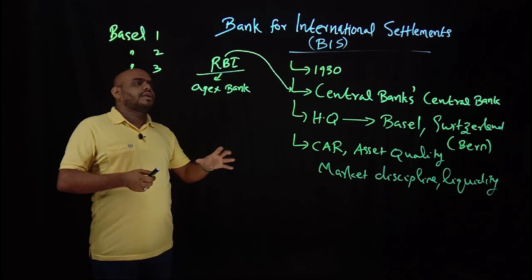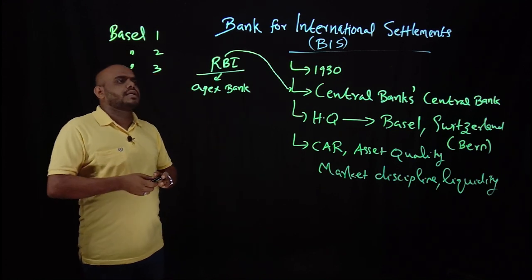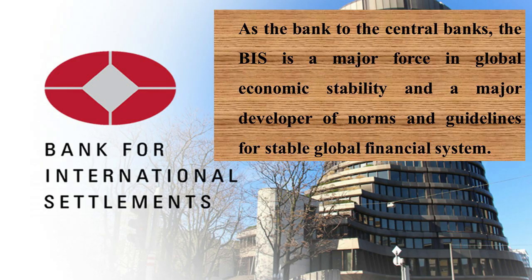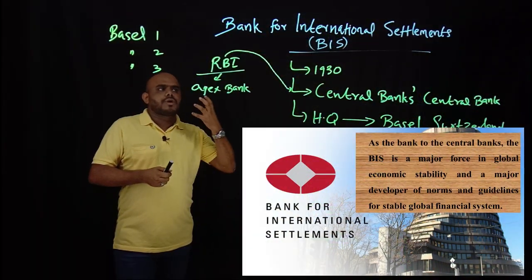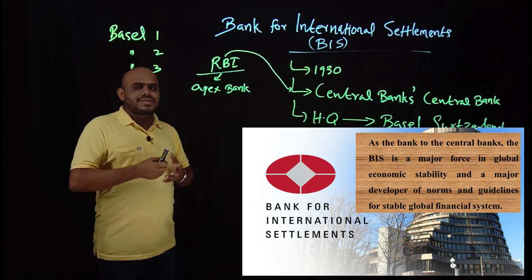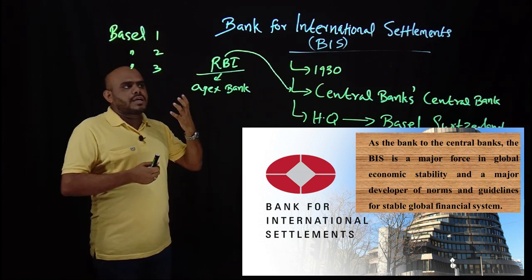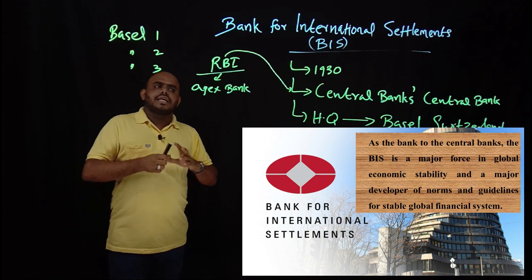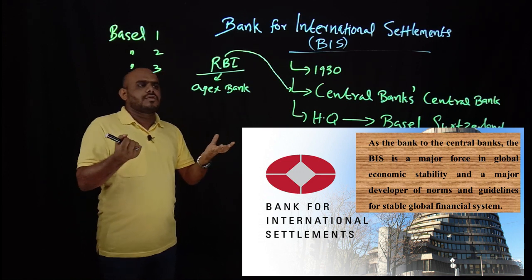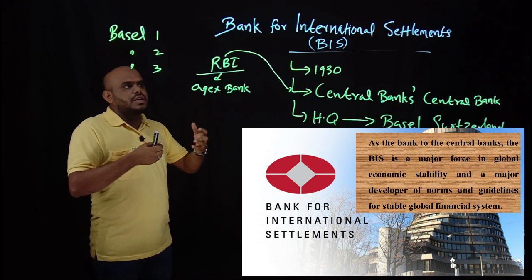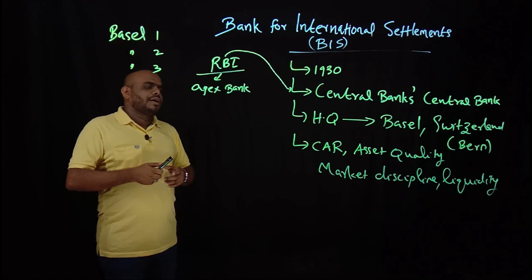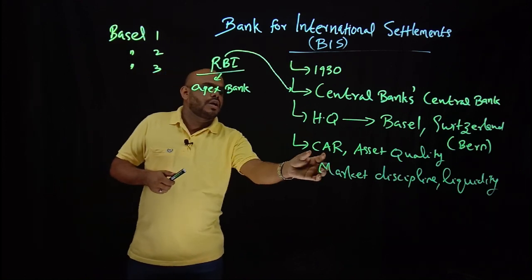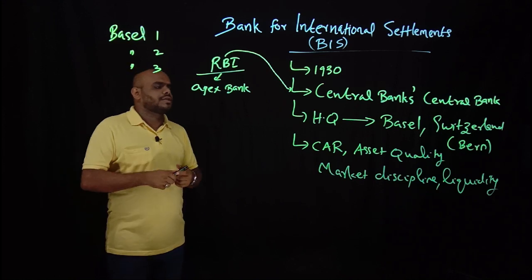The Bank for International Settlements actually performs lots of functions and services. They act as lender of last resort, provide foreign exchange reserve assistance, and conduct studies regarding measures needed for enhancing the efficiency of central banks. They also set norms like capital adequacy ratio and many other things.